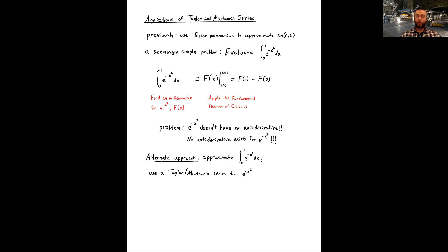How do we tie this in to power series and Maclaurin series? Like we did with approximating sine of 0.2, we'll use a Maclaurin series for the function inside the integral — in this case e to the negative x squared — and then integrate that power series term by term. That is one of the main advantages of power series: calculus is very easy to do with powers of x.